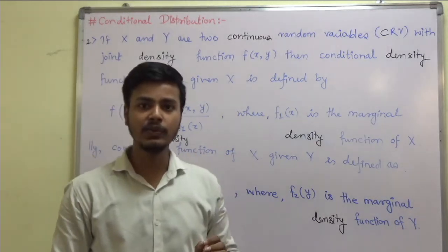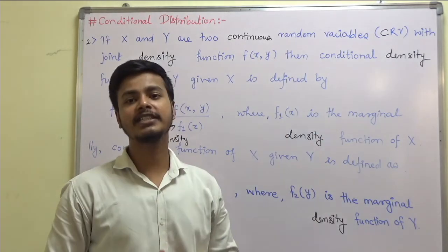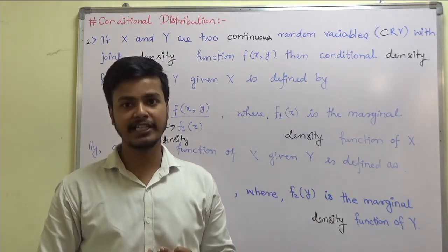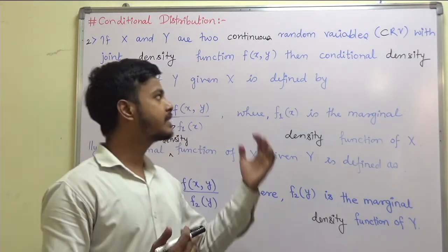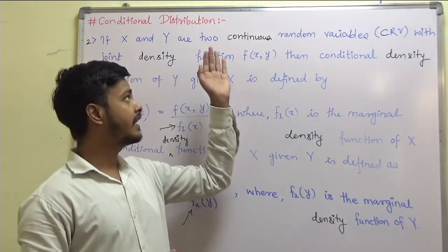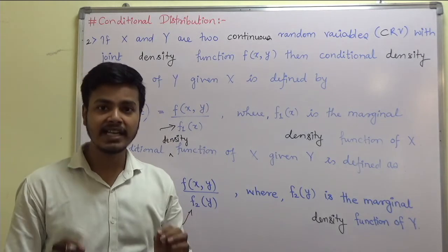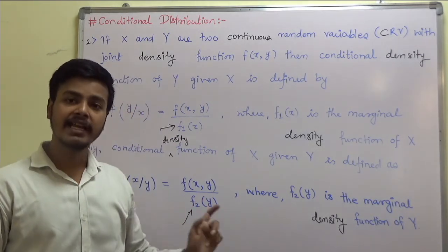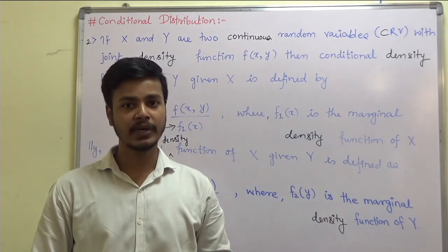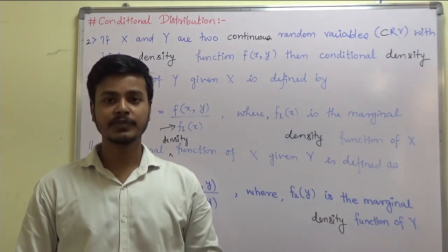I hope the definition is clear. It is just like a buy-one-get-one offer: you write the definition for the discrete random variable and make some minute changes to define it for the continuous random variable. Before you go to the examples on discrete and continuous random variables for conditional distribution, remember these definitions well and also the terminologies discussed in the joint distribution. Thank you for watching this learning video and happy learning.